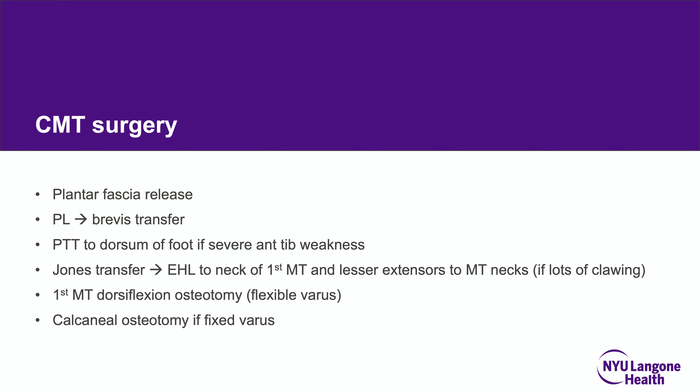For surgery, physical exam is key. Early soft tissue procedures alone can be helpful, especially in young children. With bony deformity, tendon transfers alone lead to high failure rates. Plantar fascia release is critical for all procedures. Consider peroneus longus to brevis transfer, and transferring the PTT to the dorsum of the foot if there is severe anterior tip weakness. The Jones procedure — for clawing — involves transferring the EHL of the big toe and lesser extensors to the metatarsal necks. A first metatarsal dorsiflexion osteotomy is a powerful tool for flexible varus, and the calcaneus is fixed if there is fixed heel varus.